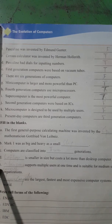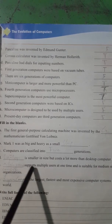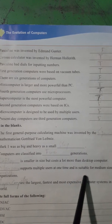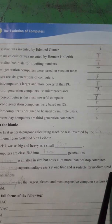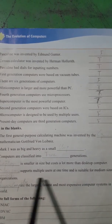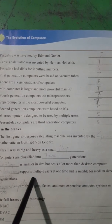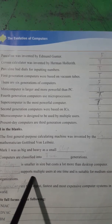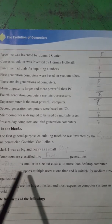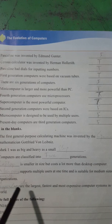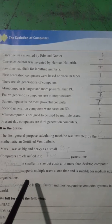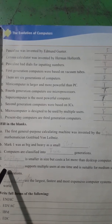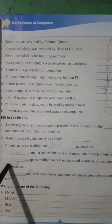Next: dash supports multiple users at one time and it is suitable for medium size organizations. It is the one where multiple users can work at one time and it is suitable for medium size organizations — who is it? Mainframe computer. Now we will write mainframe computer.